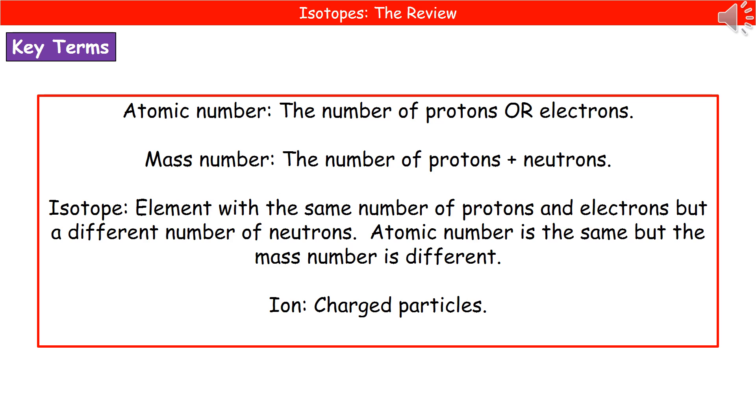Then we come on to two terms we've not mentioned. The first one is isotope. Now, what we actually find is that elements actually exist in a range of different isotopes. So they have the same number of protons and electrons, but they have a different number of neutrons present. So you've got different isotopes of carbon, for example. You've got carbon-12, carbon-13 and carbon-14. They've all got the same number of protons and electrons, but they've got a different number of neutrons each. Hence the different mass numbers.